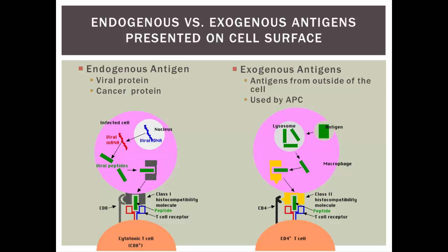Let's look at endogenous antigens versus exogenous antigens. An endogenous antigen is one that came from within the cell — its origin started within the cell. Think of viral proteins, for example. A virus infects a cell and gets the cell to start making viral proteins. Since these proteins were made inside the cell, they're considered endogenous. A cancer cell starting to go out of control would also start making abnormal proteins. In either case, they put these proteins on MHC class 1 — this is our red flag indicating that something is wrong inside the cell.